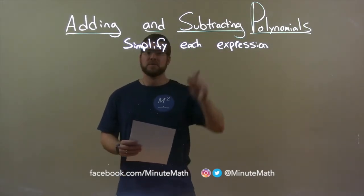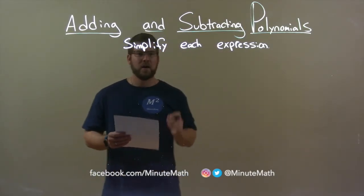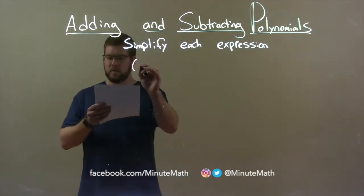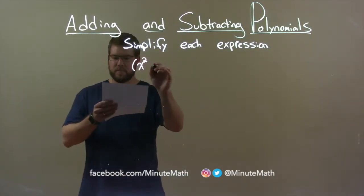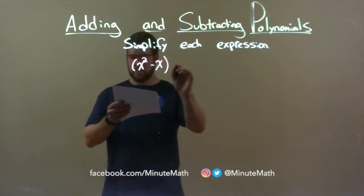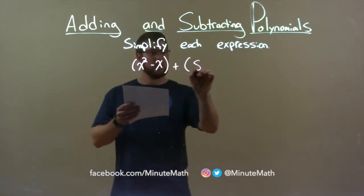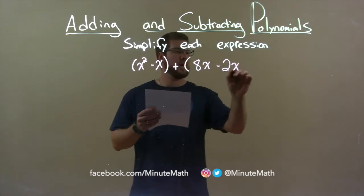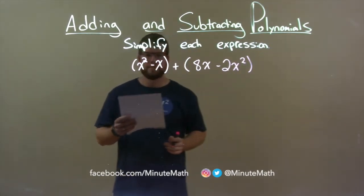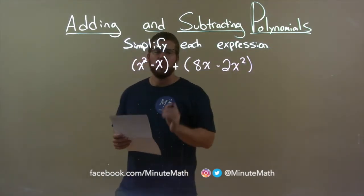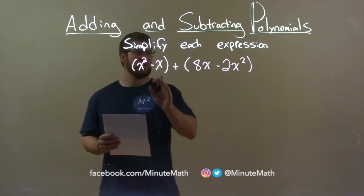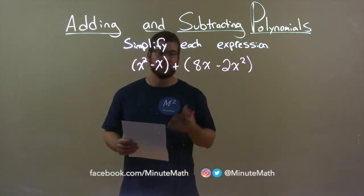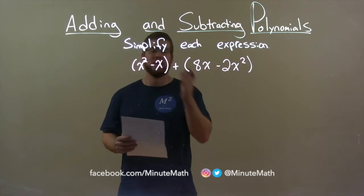Simplify each expression. So, if I was given this expression: x squared minus x plus 8x minus 2x squared. Well, one thing I want to do is first, within each parenthesis, is there anything I can simplify? The answer is no — there's nothing within each I can simplify.